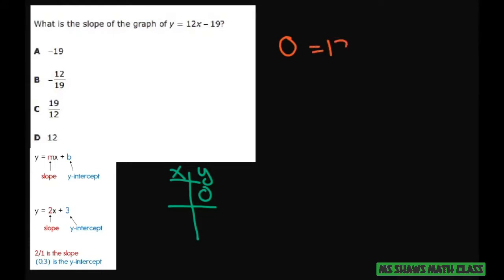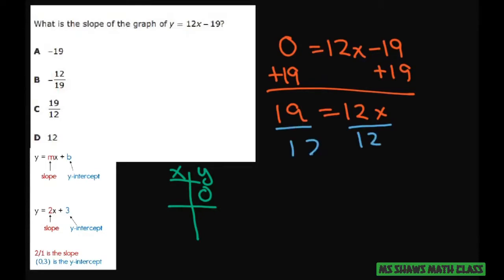y equals 12x minus 19. If you add 19 to both sides, you would get 19 equals 12x. Then divide both sides by 12. So x would equal 19 divided by 12.